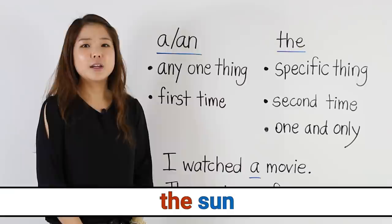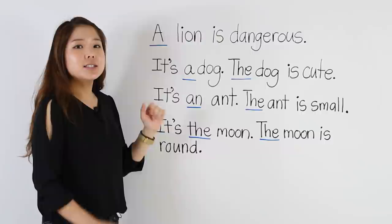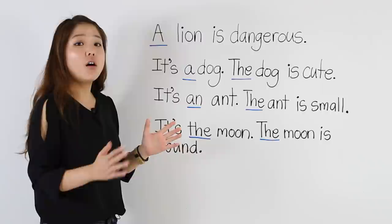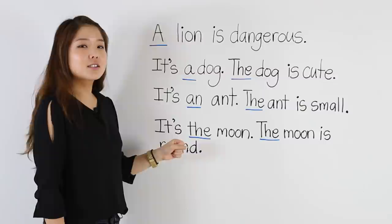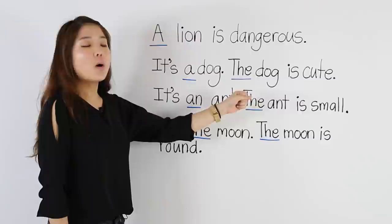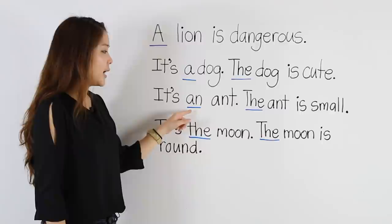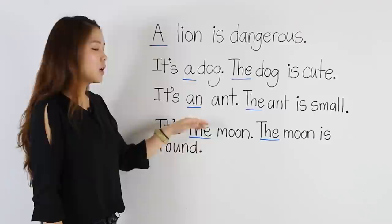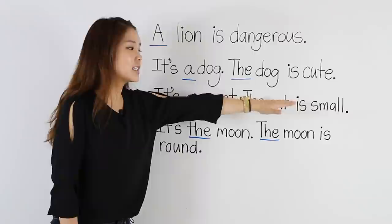Let's look at some more examples. A lion is dangerous — I use a because I'm talking about any one lion; all lions are dangerous. The next sentence: it's a dog. I'm talking about this dog for the first time, so I use a. Now I'm talking about this dog for the second time, so I say the dog is cute. Here's a similar example: it's an ant. I used an because ant starts with a vowel, and I'm talking about this ant for the first time. Now talking about it again: the ant is small.